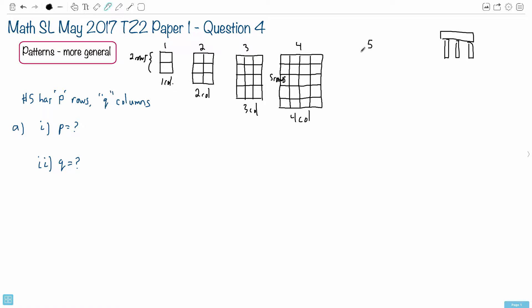So in other words, to get to this one right here, well it's gonna have one more row. So if this one here had five rows, this one has six rows. And if this one here has four columns, this one here has five columns.